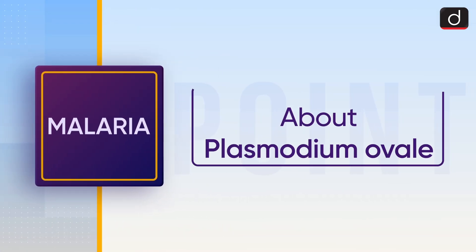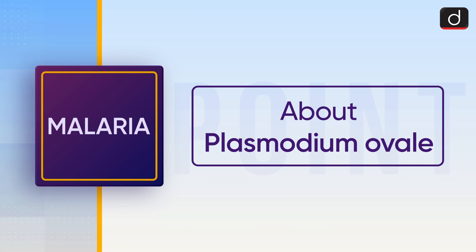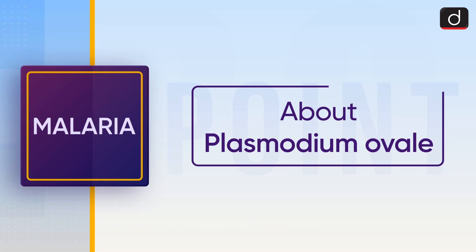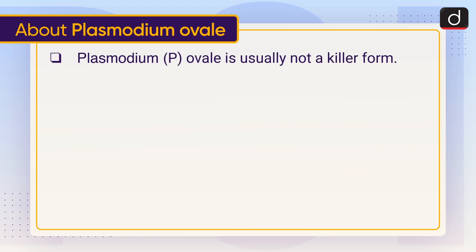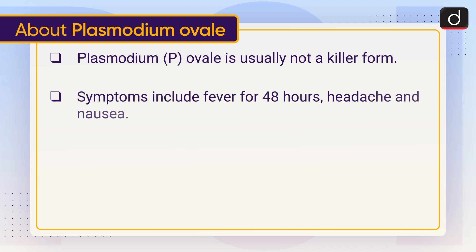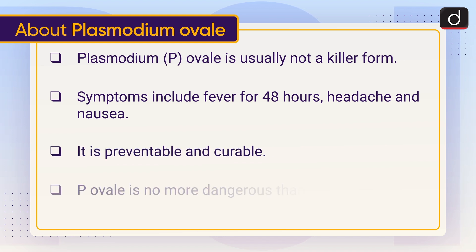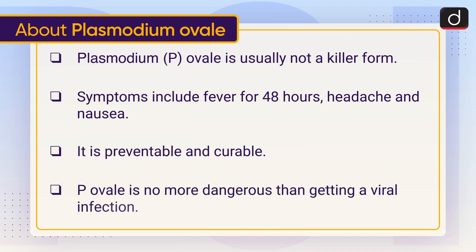Now let's discuss Plasmodium ovale. Plasmodium ovale is usually not a killer form. Symptoms include fever for 48 hours, headache, and nausea. It is preventable and curable. P. ovale is no more dangerous than getting a viral infection.